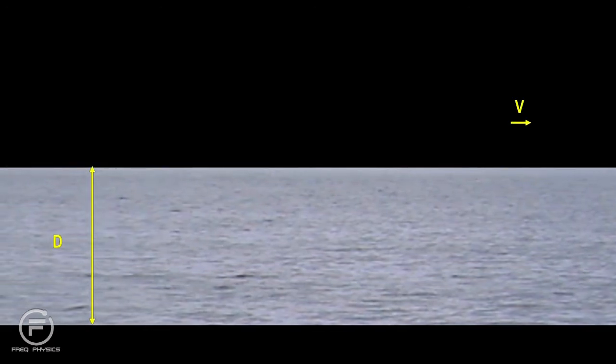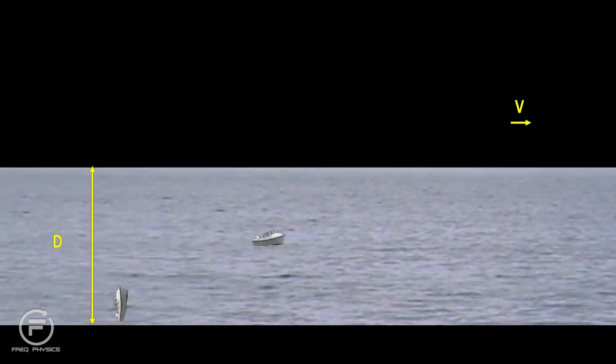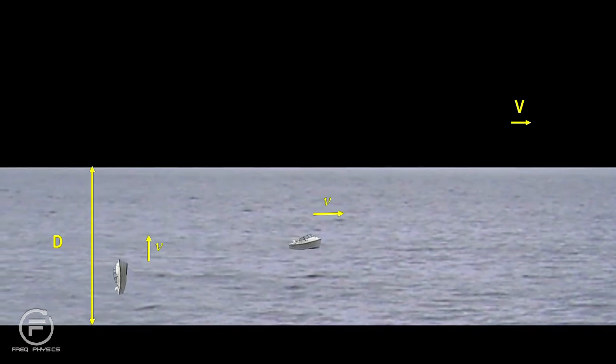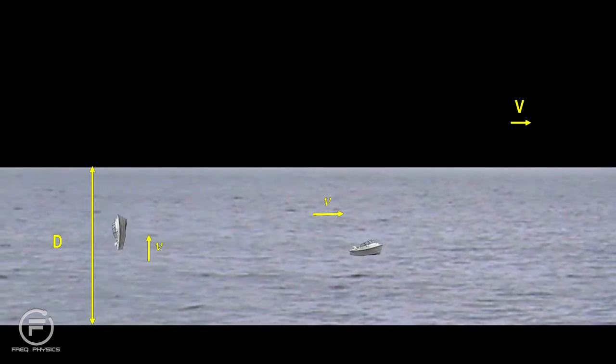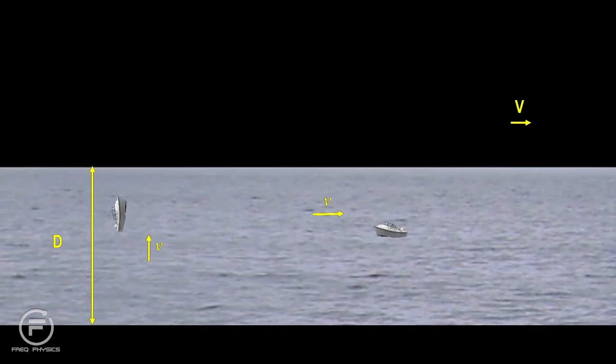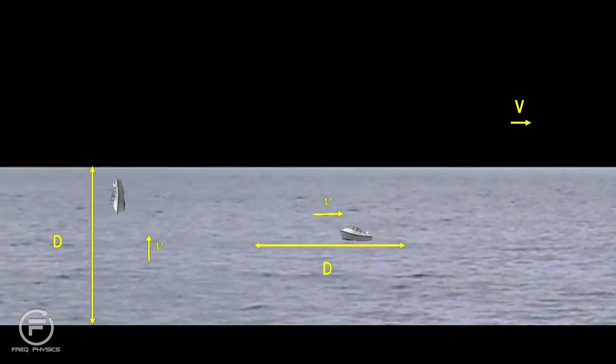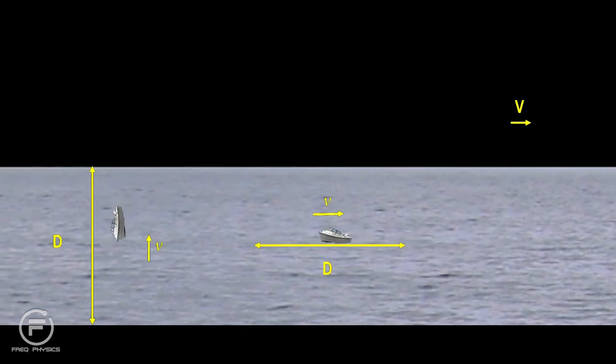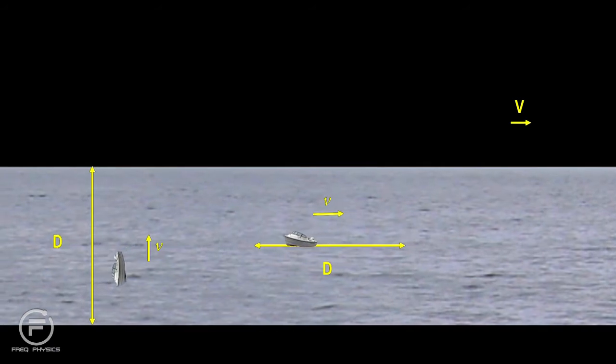A good way to see what's happening is to picture a river that measures d across and is flowing to the right with a speed capital V. Now we put two boats in the river, each moving with a speed lowercase v. One boat will move across the river to a point on the other bank directly opposite the starting point and then return. The other boat will travel downstream the distance d and then return to its starting point. We'll calculate the time required for each round trip.